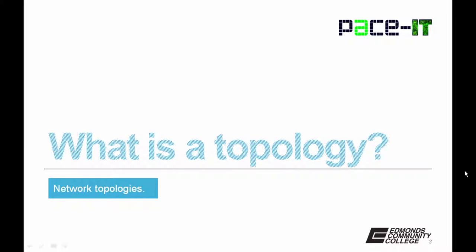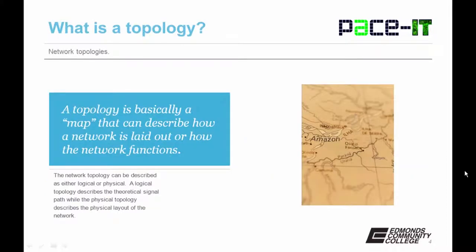So what is a topology? A topology is basically a map that can be used to describe how a network is laid out or how a network functions. A network topology can be described as either being logical or physical. A logical topology describes the theoretical signal path, while the physical topology describes the physical layout of the network. You should know that a logical and physical topology don't need to match.